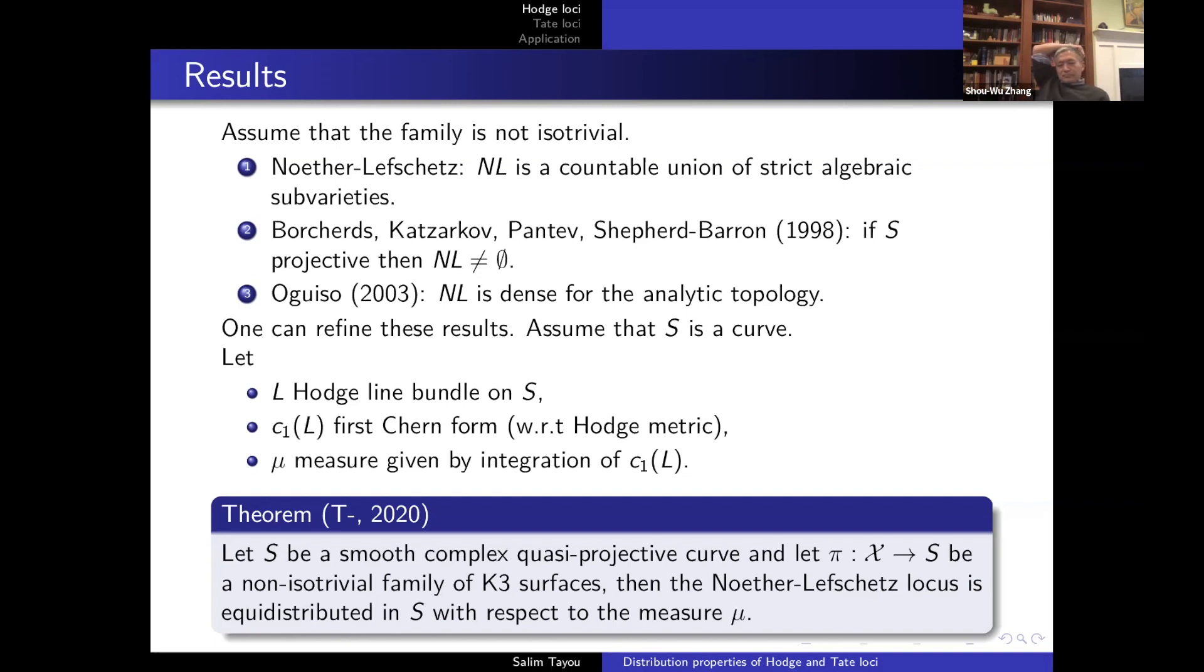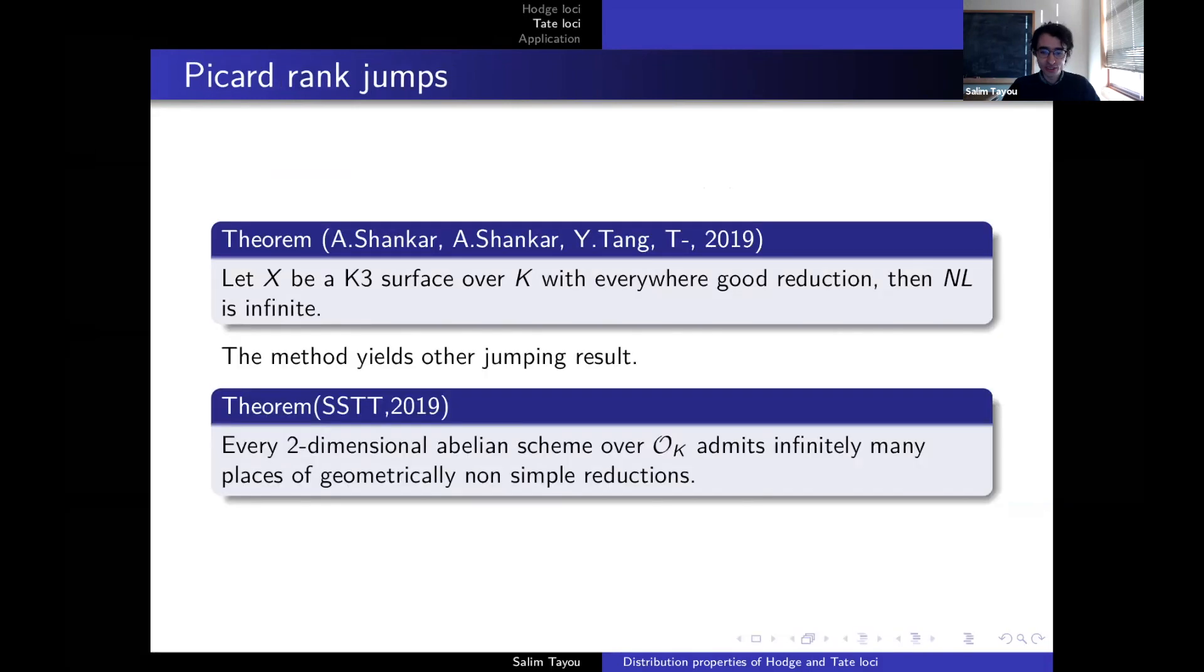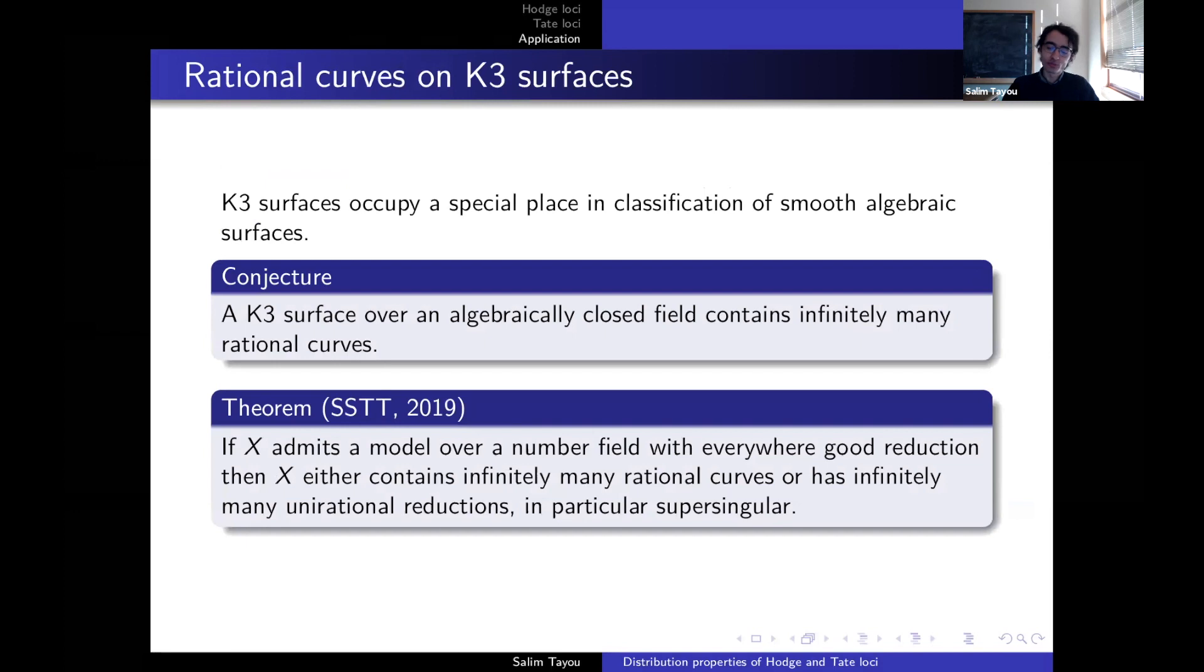Which theorem of yours is closest to Elkies? The last one, which concerns the jumps, supersingular ones. So Elkies theorem says that if we take an elliptic curve over Q, say for simplicity, there are infinitely many places where the reduction is supersingular. Here we have an alternative, we don't really get an exact analog of Elkies theorem. We are not using anything like his proof.